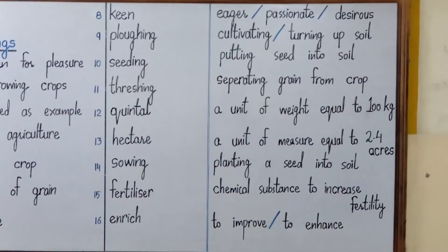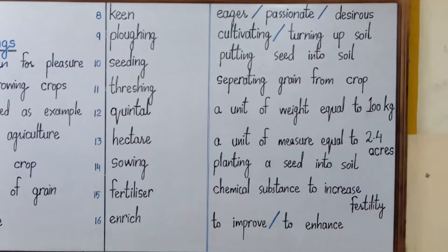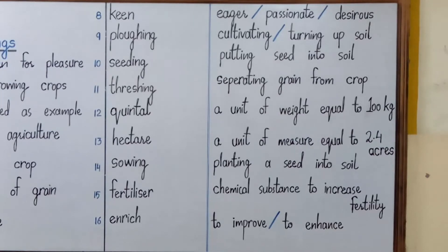Number eight is 'keen'. You have already gone through this word a couple of times in your last chapters. Keen means eager, passionate, or desirous — it is an adjective. We can say 'I have keen interest', meaning eager or passionate interest. The word keen can also be used to mean 'very', but as an adjective it means eager or passionate. For example: I am keen to learn English, I am keen to learn how to play cricket, I am keen to learn how to swim.